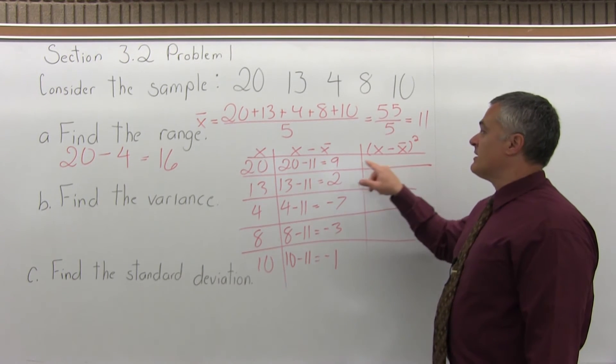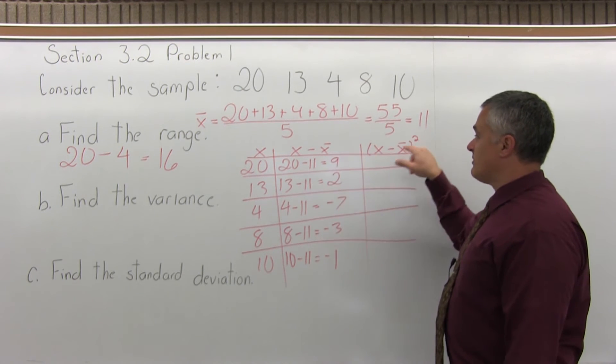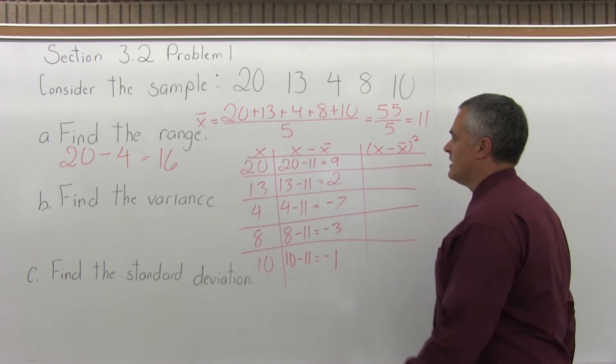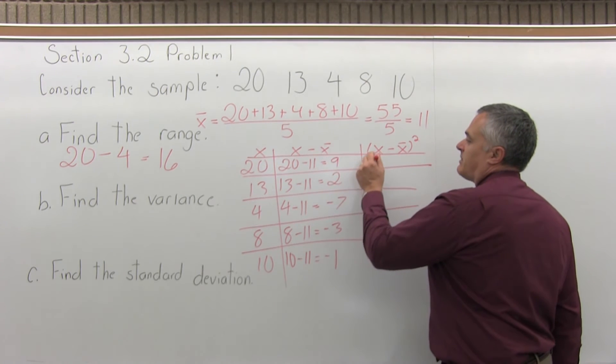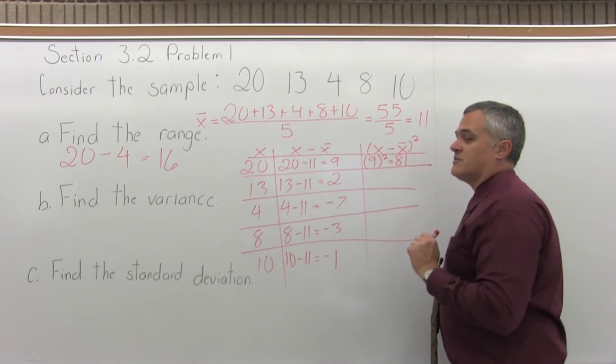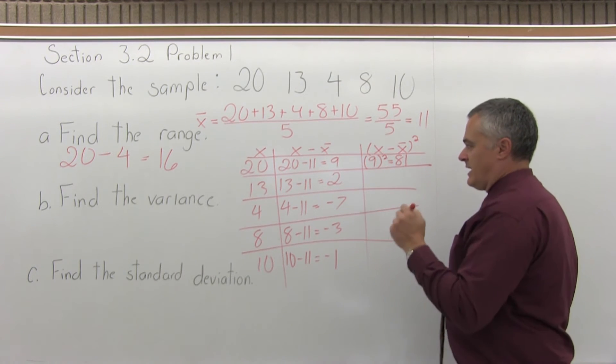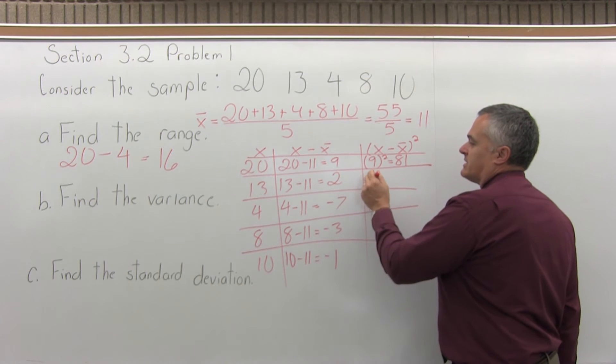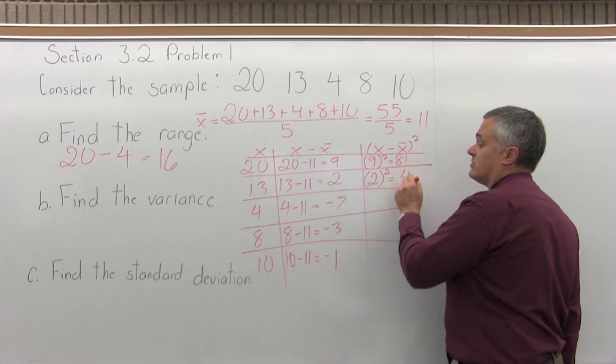Now the last column, take the answers for x minus x-bar, and raise them all to the second power. So in the top row, x minus x-bar was 9, so I'll do 9 to the second power, which is 9 times 9, which gives me 81. The next row, my answer for x minus x-bar was 2, so I'll have 2 to the second power, 2 times 2, which is 4.